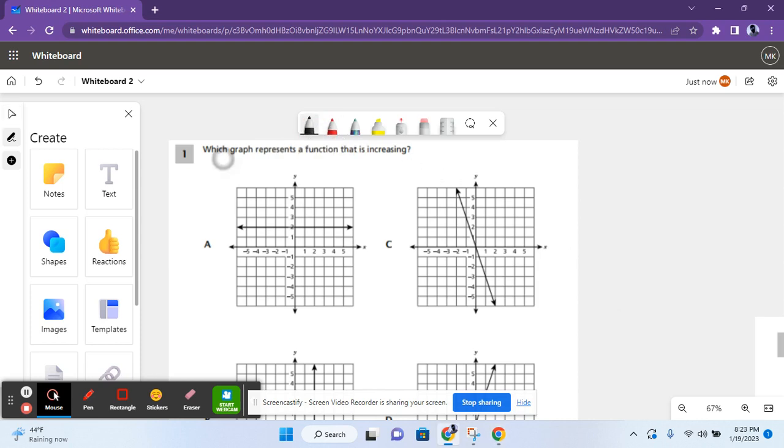For the first question it says which graph represents a function that's increasing. So basically increasing functions, they go like this, they go this way. Let's see. For A it shows a horizontal line, it doesn't increase like this, so A is not a correct answer.